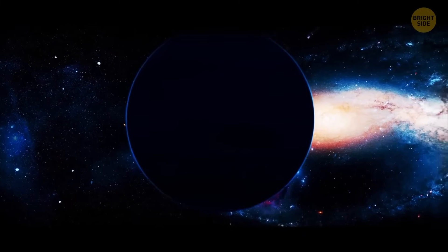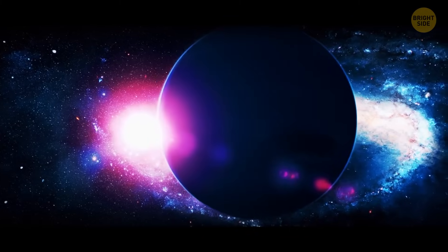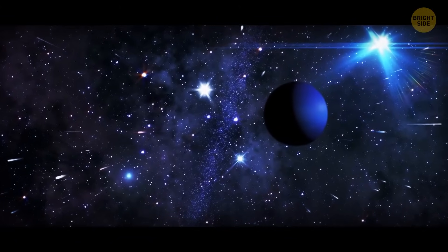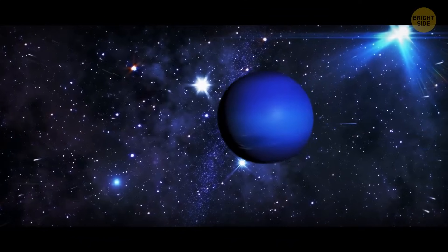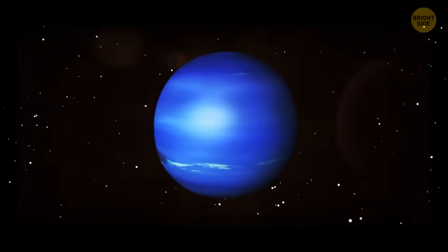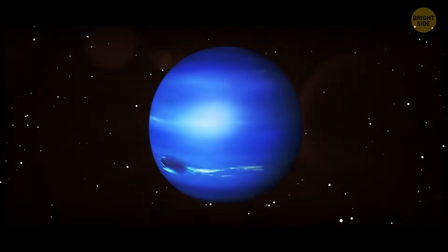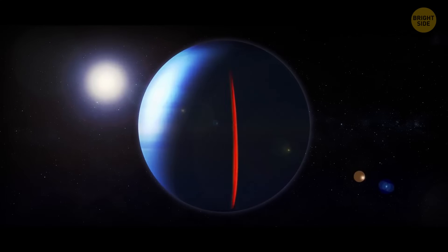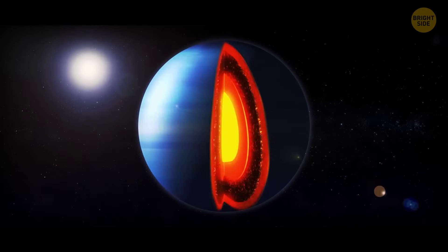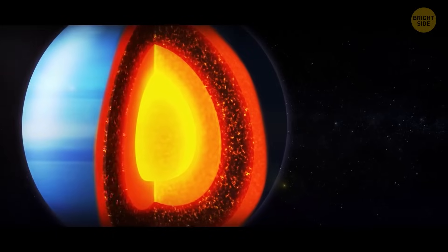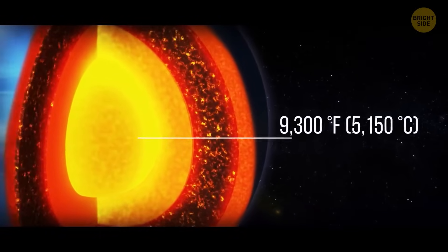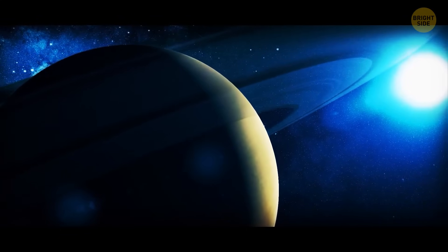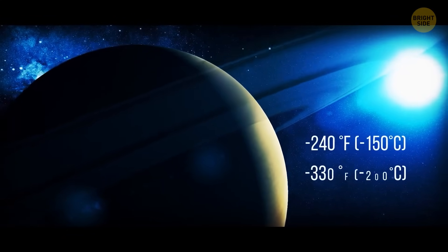You'd expect Neptune to be an extremely cold and dark place — after all, it's an ice giant 2.8 billion miles away from the Sun, where noon is similar to twilight on our planet. But this ice giant appears to be creating its own heat — 2.6 times more heat than it gets from the Sun. This probably has to do with all the pressure near the planet's core, which builds and releases hydrogen, keeping Neptune's center at a crazy temperature of 9,300 degrees Fahrenheit. But its atmosphere is still quite chilly, ranging from about negative 240 to negative 330 degrees Fahrenheit.